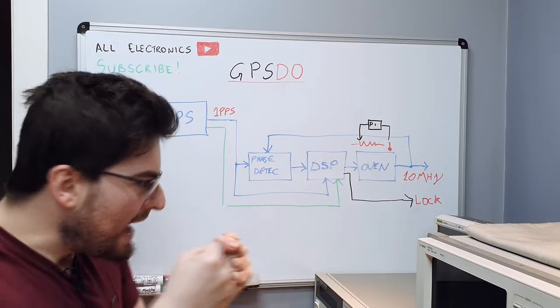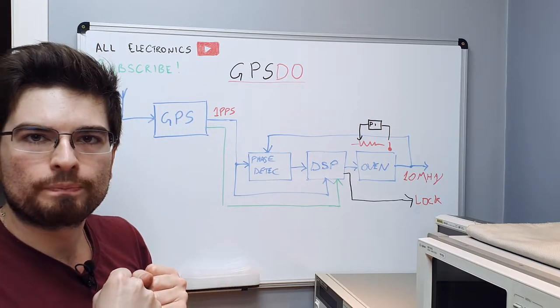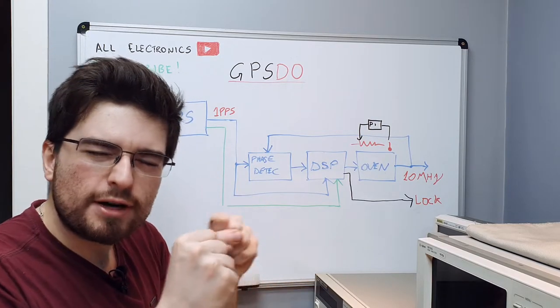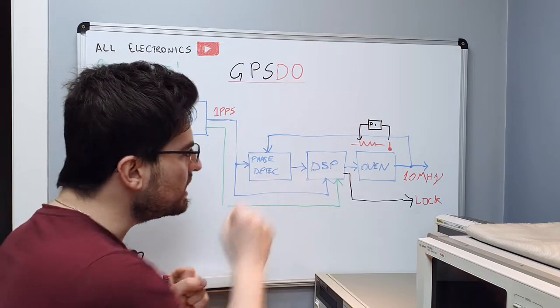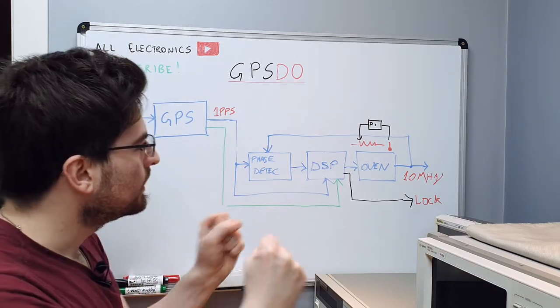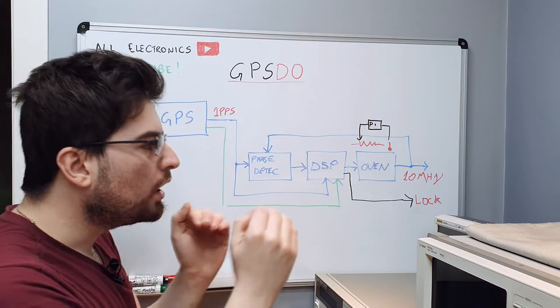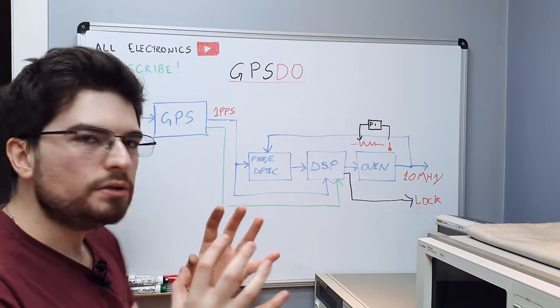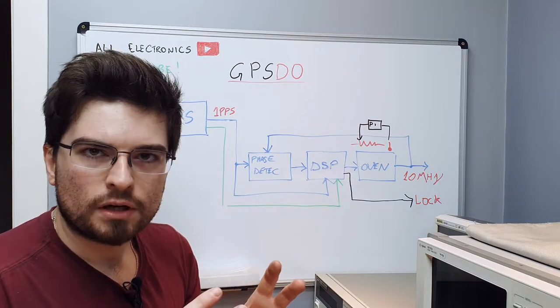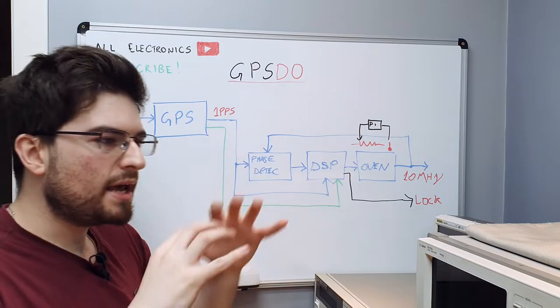So we don't try to lock the phase precisely and instantaneously with the oven oscillator. We slowly look to the differences in phase using the DSP algorithms and try to adjust slowly the voltage of the crystal oscillator to lock the phase. But we try to do it in a smarter way, not in a precisely closed loop linear way. We make algorithms that are non-linear.